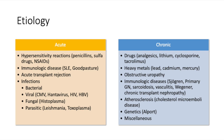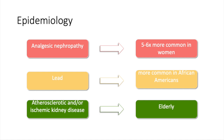Identifying the cause of the tubular injury is important in the diagnosis, treatment, and prognosis of this pathology. There are a few populations where TIN is more common. Analgesic nephropathy is up to 5 to 6 times more common in women, in part because women consume more pain medications overall. Lead nephropathy is considered more common in African Americans due to various socioeconomic factors associated with household and work exposure to lead. Atherosclerotic or ischemic kidney disease is evidently more common in the elderly.